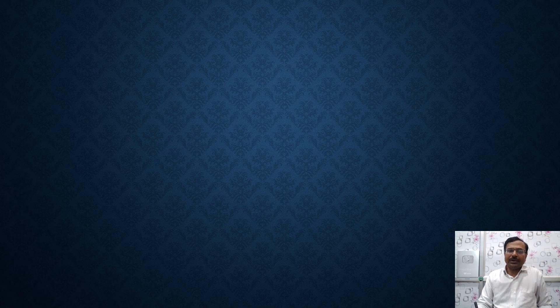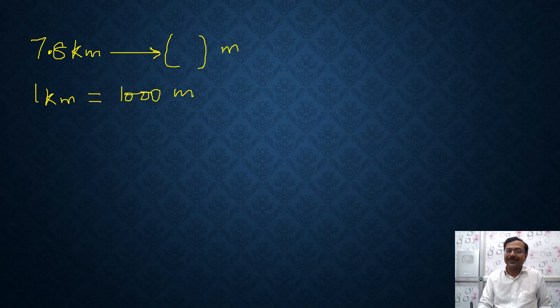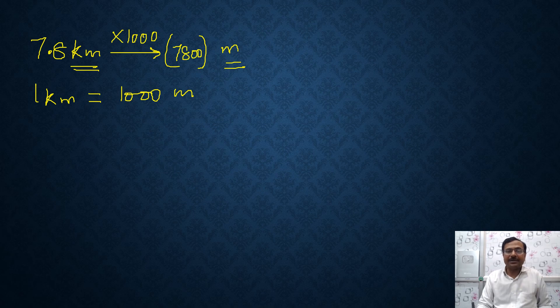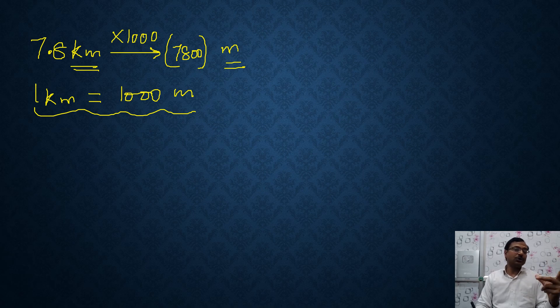Let's talk about 7.8 kilometers to be converted into meters. Now I know that one kilometer has 1000 meters and therefore to convert this large unit into a small unit, I will multiply by 1000 which gives me 7,800 meters as the converted form of this question. You only need to know how many meters are there in a kilometer and you need to know that you are converting a larger unit into a smaller unit.